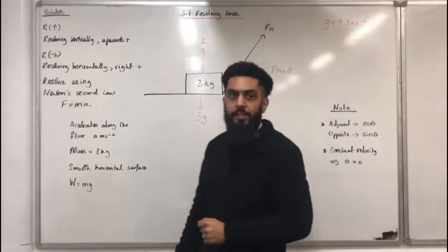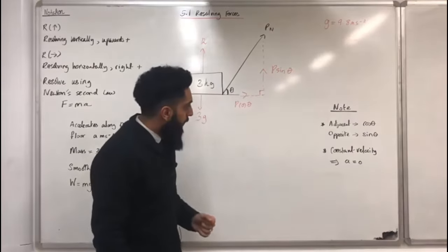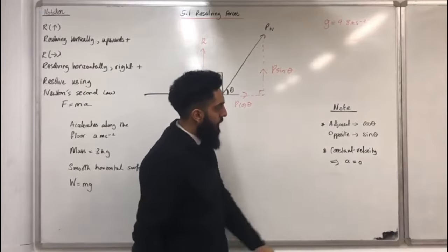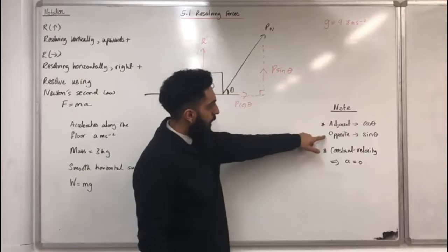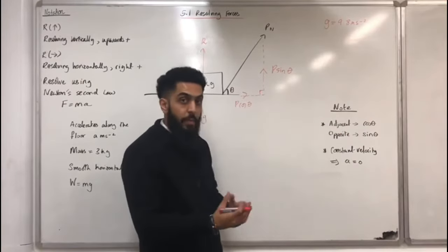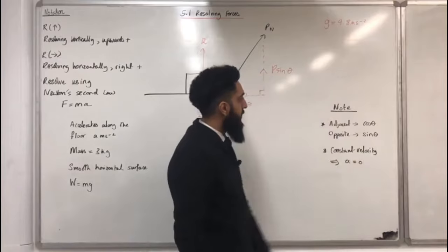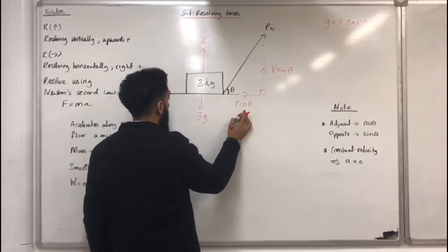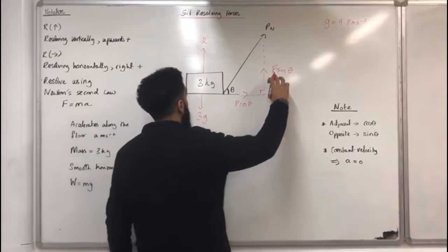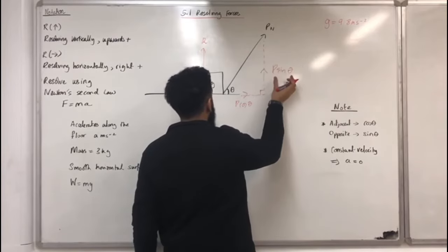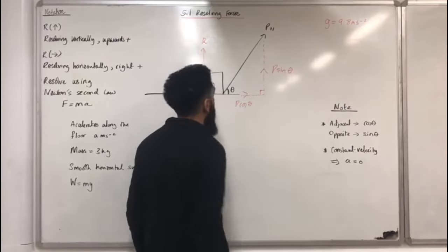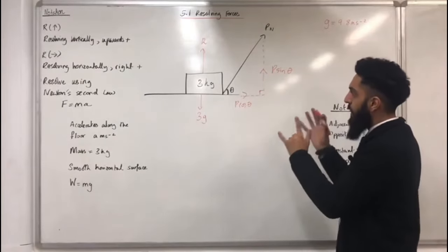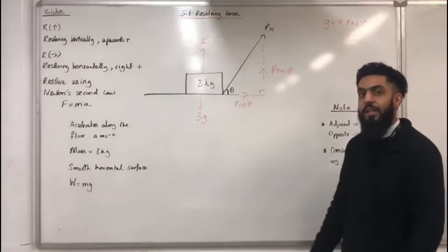A quick note: if you have the adjacent side, the component force is of the form cos theta. If you have the opposite side, the component force is of the form sin theta. So here we have the adjacent, therefore cos theta, and here we have the opposite, therefore sin theta. That is my complete force diagram.